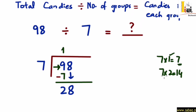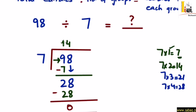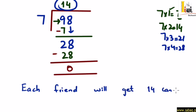अब 28 को 7 से divide करना है। तो 7 का table देखते हैं: 7×2=14, 7×3=21, 7×4=28। 28 आ गया। तो 7×4=28। और इस step में 28 में से 28 को minus करना है — दोनों एक जैसे हैं, तो minus होकर जवाब आएगा 0। जब remainder 0 आ जाता है तो division complete हो जाती है। इसका मतलब है quotient 14 हमारा जवाब है। हर friend के पास 14 candies जाएंगी। Each friend will get 14 candies। अगर 98 candies हों और उन्हें 7 friends में divide किया जाए, तो हर friend 14 candies लेगा। इस तरह से हम division से related word problems को solve करते हैं।